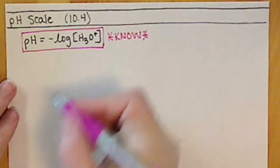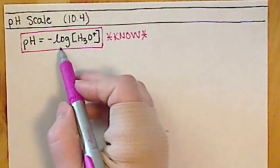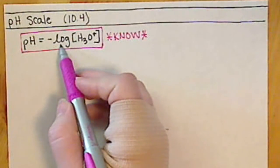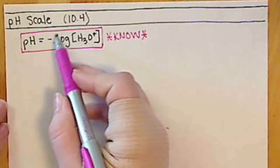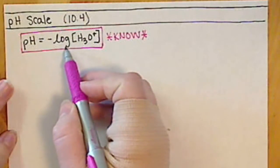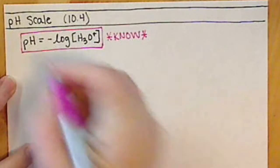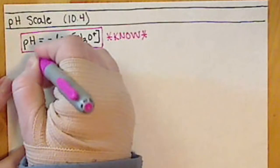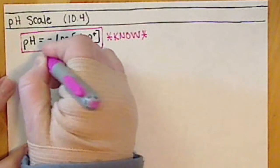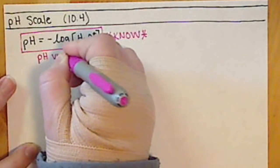Another thing about this pH value: since we're taking a mathematical operation called a logarithm, and because we're taking a logarithm of a number, our pH values are unitless.